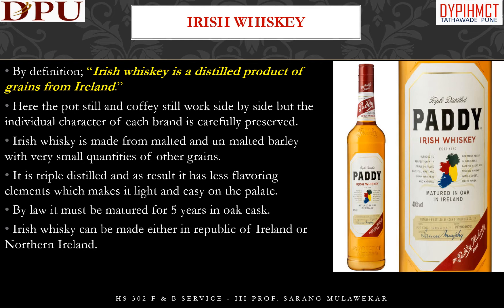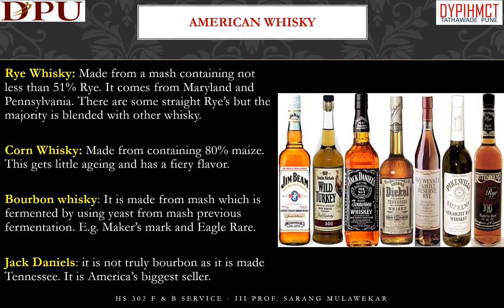Irish whiskey is a distilled product of grains from Ireland. Here, the pot still and patent still work side by side, but the individual character of each brand is carefully preserved. Irish whiskey is made from malted and unmalted barley with very small quantities of other grains. It is triple distilled, and as a result has fewer flavoring elements, making it light and easy on the palate. By law, it must be matured for five years in oak casks. Irish whiskey can be made in either the Republic of Ireland or Northern Ireland.